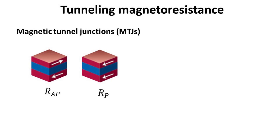We begin by recapping a few important concepts. A magnetic tunnel junction, or MTJ for short, can be found in two configurations depending on the alignment between the two magnetizations. When the two magnetizations are in the anti-parallel configuration, the MTJ is in the high resistance state, denoted R_AP. When the two magnetizations are in the parallel configuration, the MTJ is in the low resistance state, denoted R_P.